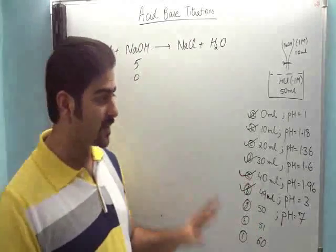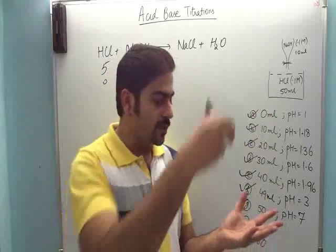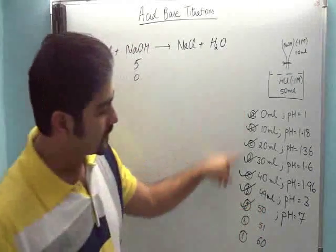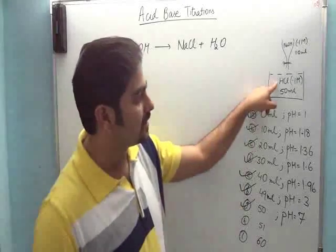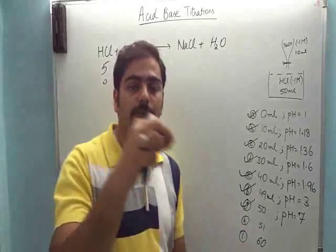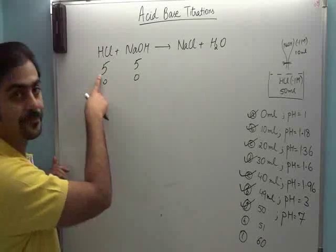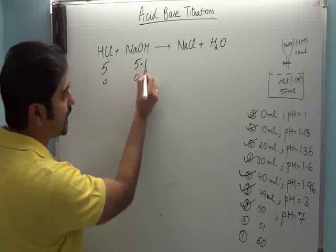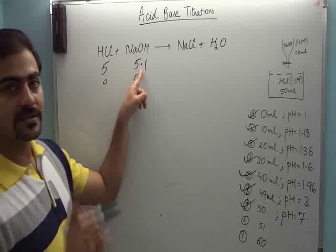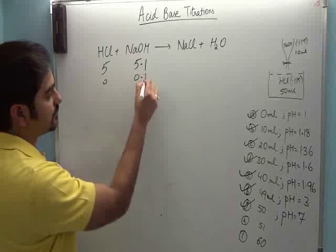Now, 51 is very important. Abhi tak hum kya kar rahe the? Humne HCl ka jo amount tha, that was 50. Aur NaOH ko hum ek ek drop karke daal rahe the. Toh abhi tak jitne bhi cases humne ki hain, the amount of NaOH was either less or equal to HCl. But 51 ke case mein, jo NaOH upar se daal rahe ho, uske amount HCl se zyaada ho gayi. Toh yeh 5.1 hai. Is case mein limiting reagent acid hai. Toh acid toh khatam ho jayega, aur NaOH bacha nega point one.